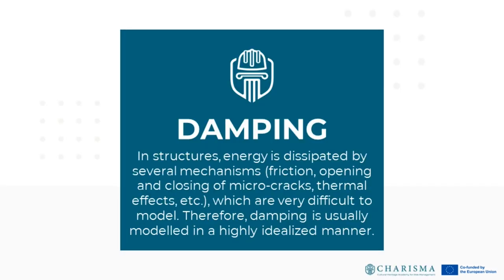Damping is clearly required, but the complexity of its mathematical description does not provide us with simple decisions, for example as to which type of dissipation device can be used in a particular structure. In the simplest cases, the damping is modeled idealistically as linearly proportional to the velocity of the motion. This can be a good start to the analysis of the structural response in cases of single degree of freedom systems.